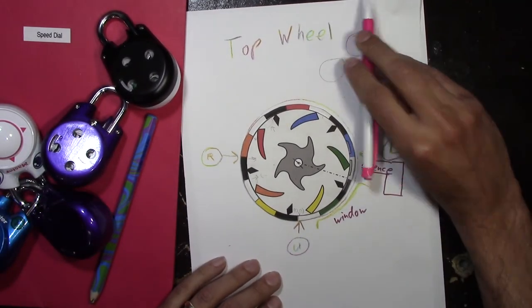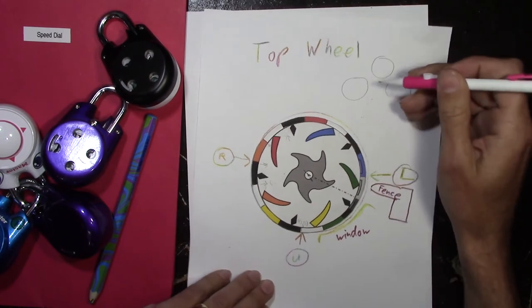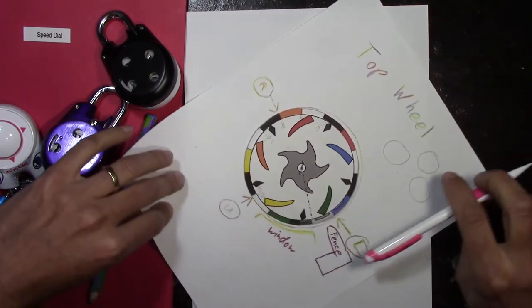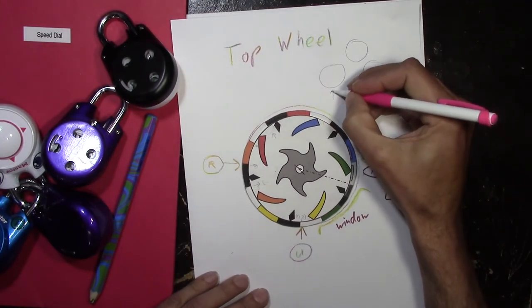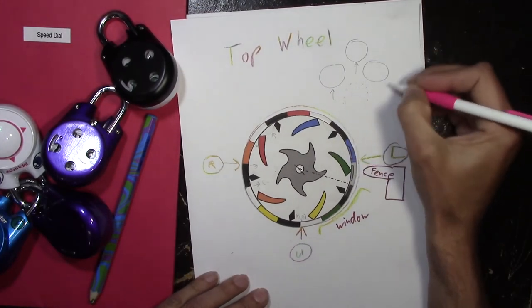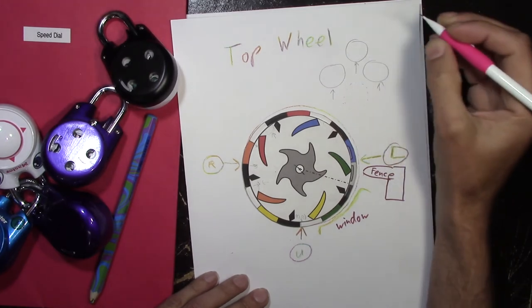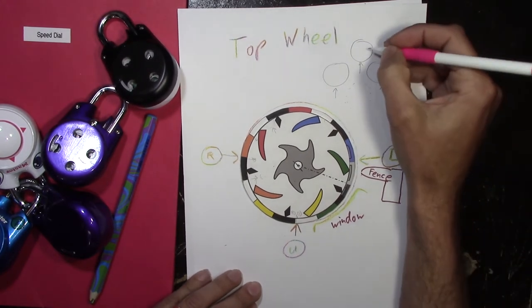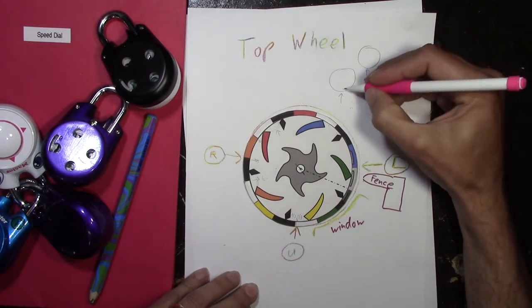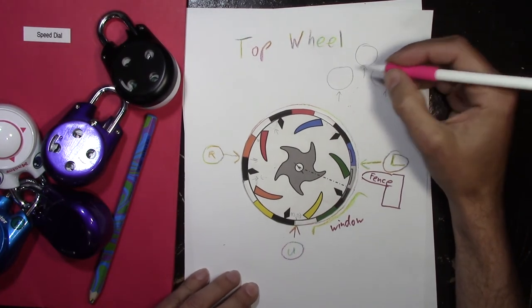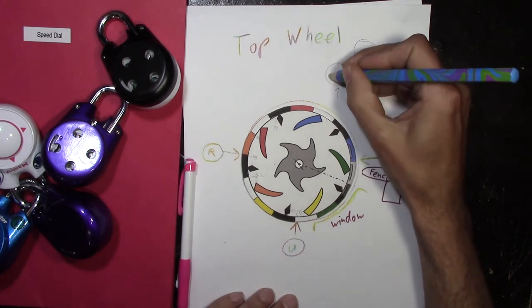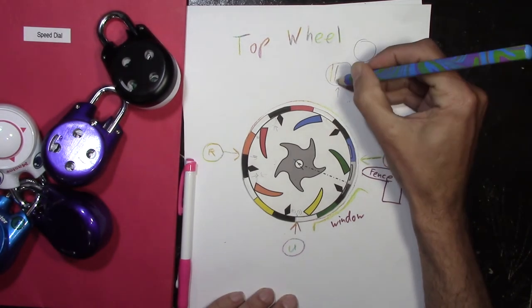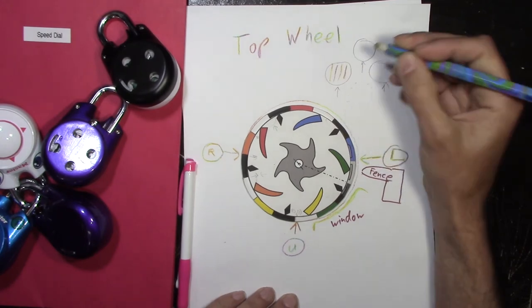An up move for the top wheel is like a right move for the left wheel. Does that make sense? So, like an up move is like this. So, this right move is going to put this wheel into a color slot. Whichever, the next color slot.